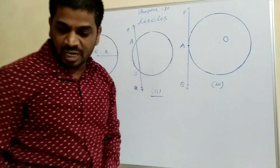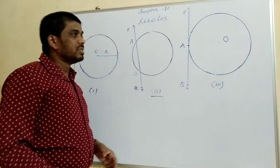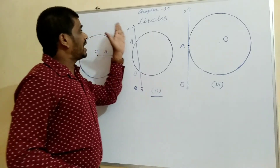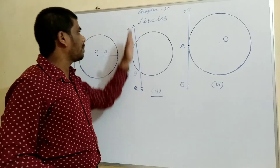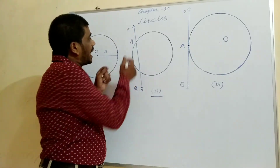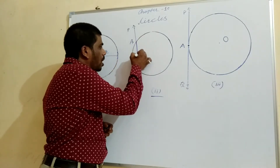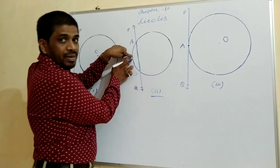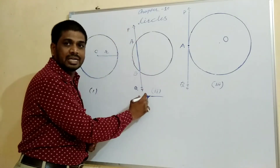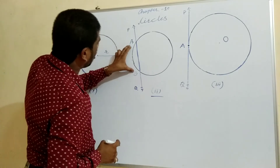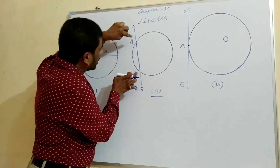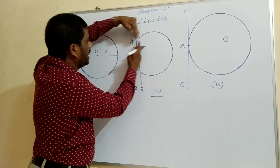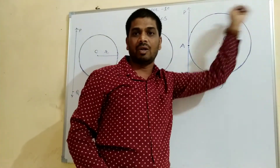This indicates that the tangent to the circle is a special case of a secant, where the two endpoints of its corresponding chord coincide. Suppose PQ is a secant and the corresponding chord is AB. When the endpoints of chord AB coincide and both are at one point, then the line becomes a tangent.